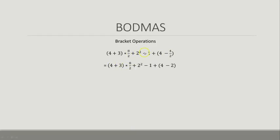Remember, things outside the bracket also have an order and a division, but we must do what is inside the brackets first. We remove the brackets by solving the expressions inside them — 4 plus 3 gives you 7, and 4 minus 2 gives you 2. The rest is unchanged.